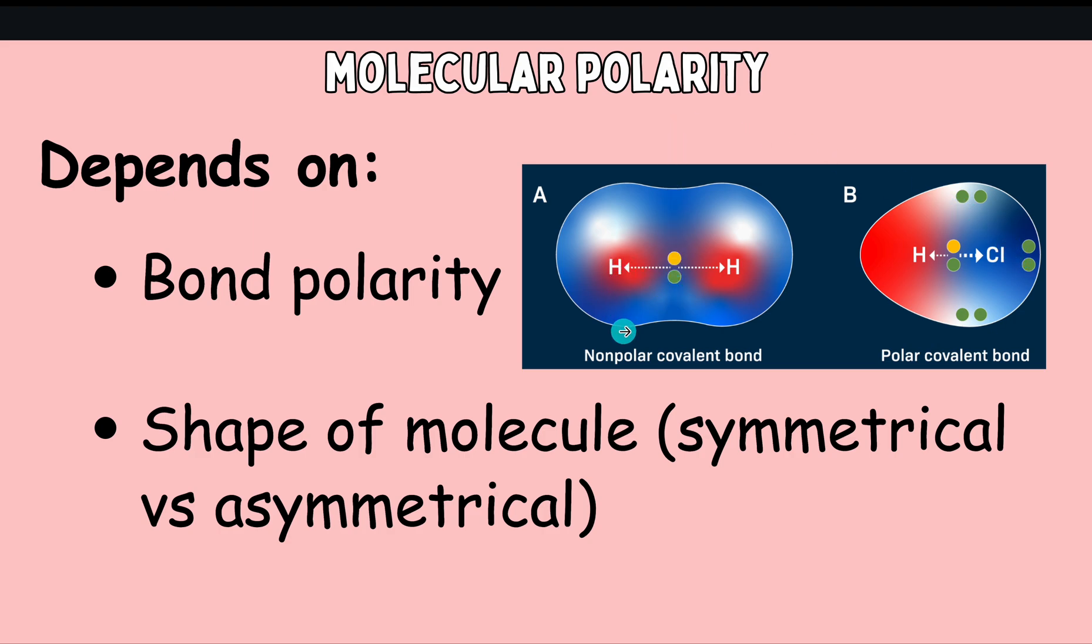We can also have a nonpolar covalent bond, which typically forms between atoms that make up a diatomic molecule, a molecule that's made of two of the same atom. And that's because the two atoms involved in this bond are the same, so they have the same electronegativities. So they're going to share these electrons between them equally.